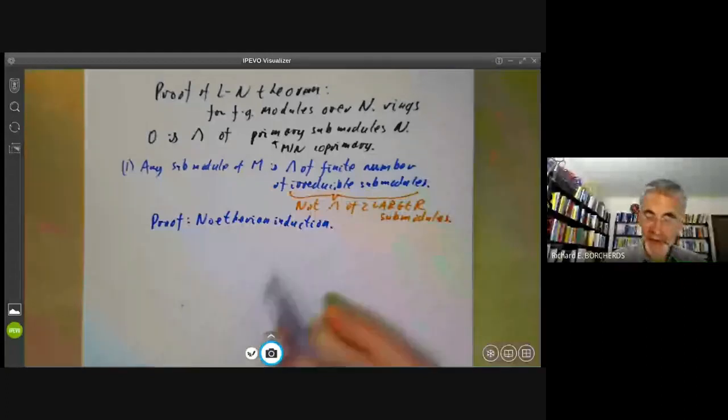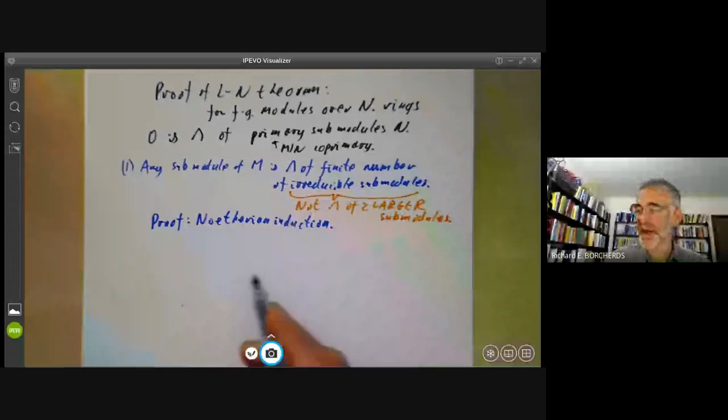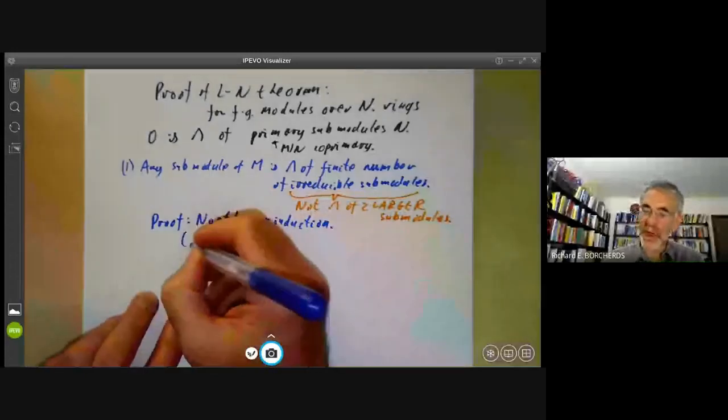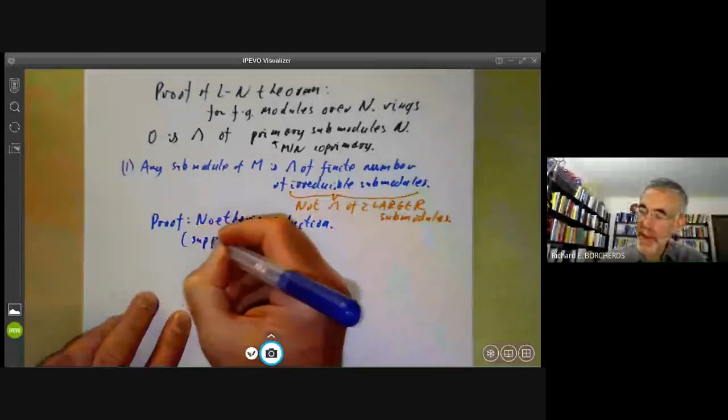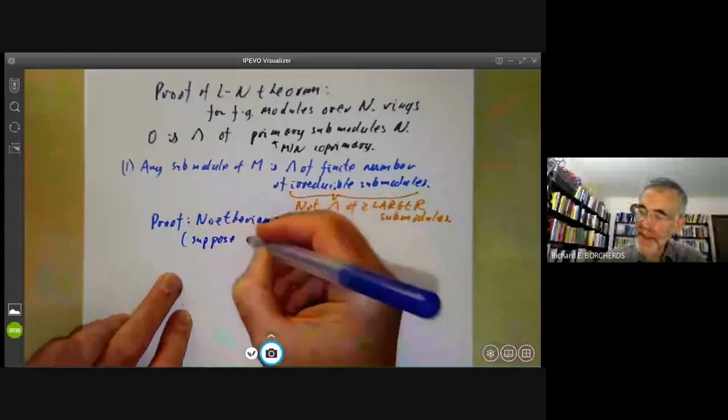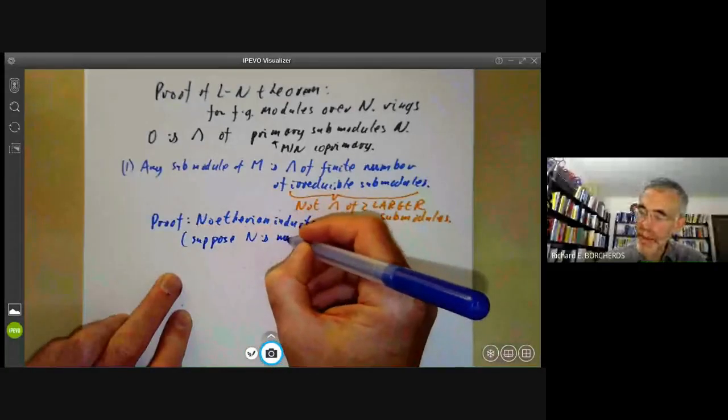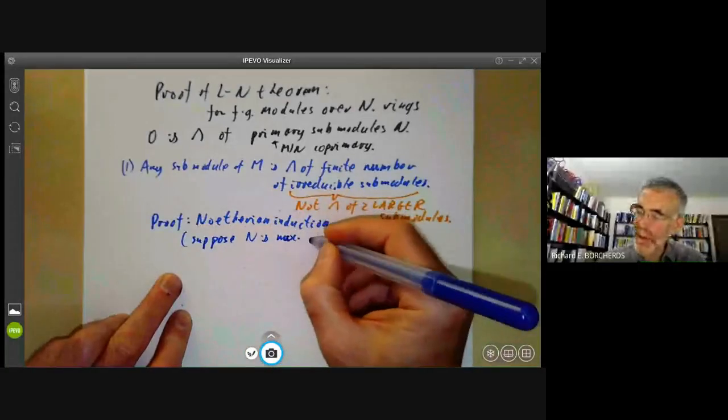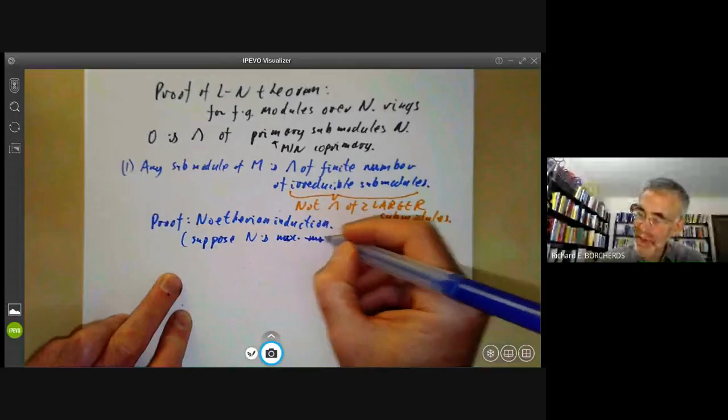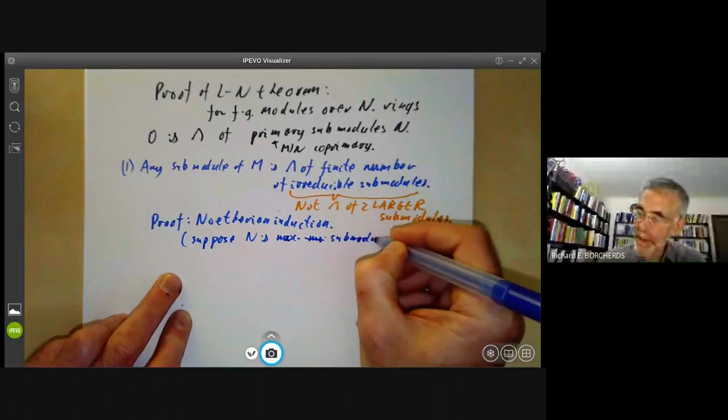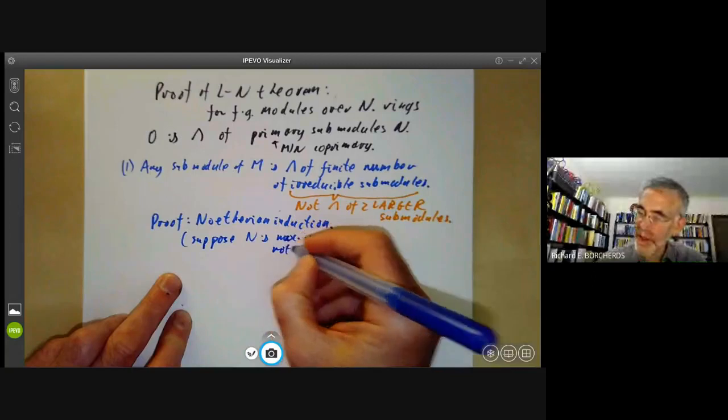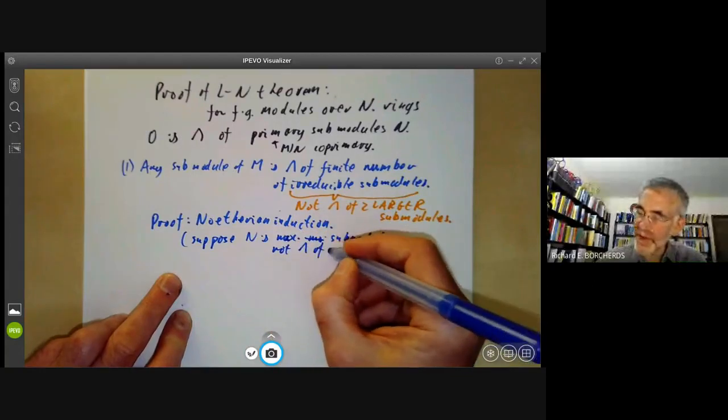Noetherian induction means you prove things by considering a maximal counterexample. So suppose n is a maximal submodule among those that are not a finite intersection of irreducibles.